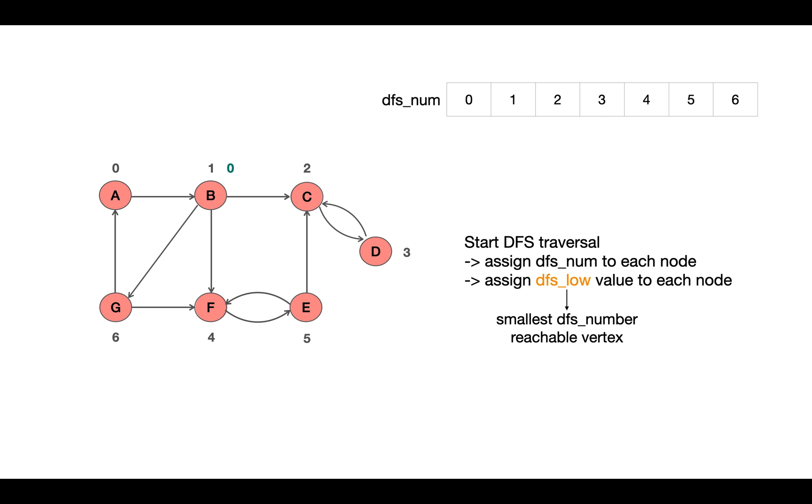And for the vertex D, it will be 2 as C is the minimum DFS number vertex for D. Similarly for E it's 4, and for G it's 0. So we also keep an array low in which we store the DFS_low values for each node.